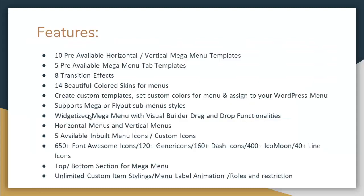Some of the prominent features from this plugin are: it has 10 pre-available horizontal and vertical Mega Menu templates, 5 pre-available Mega Menu tab templates, 8 transition effects, and 14 beautiful colored skins for menus. You can create custom templates, set custom colors for menus, and assign them to your WordPress menu.